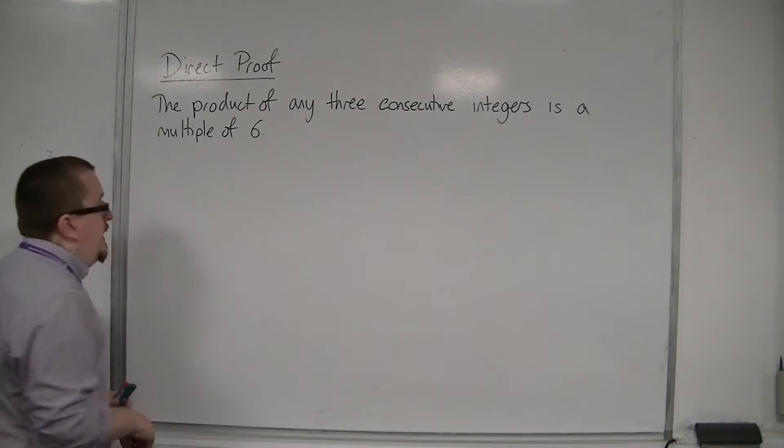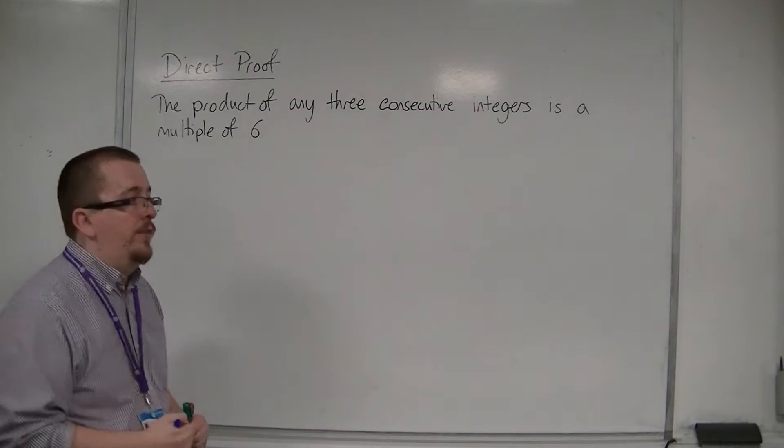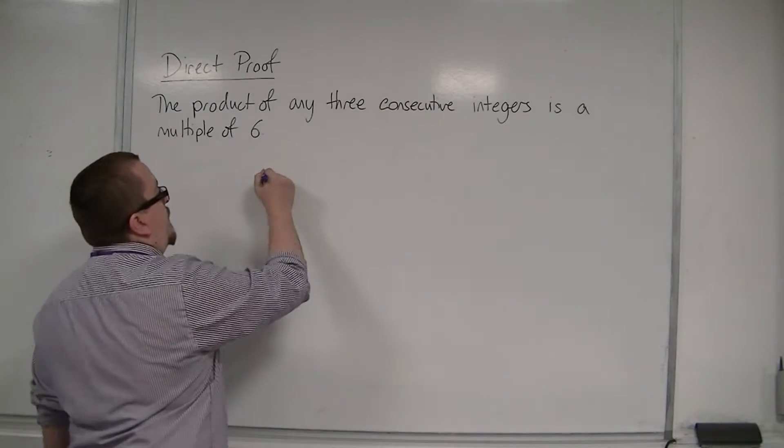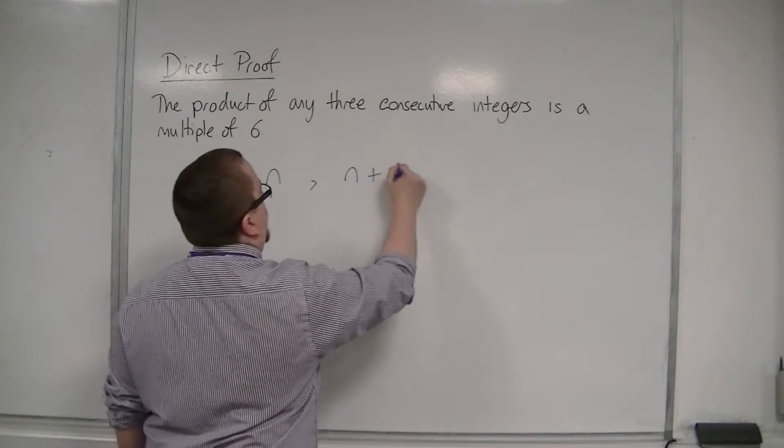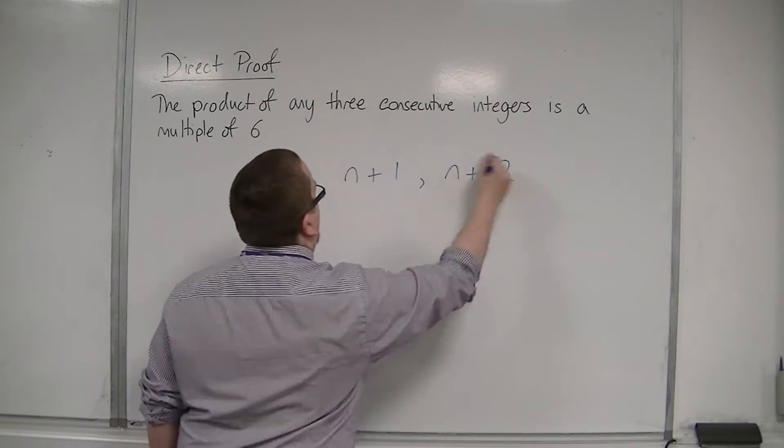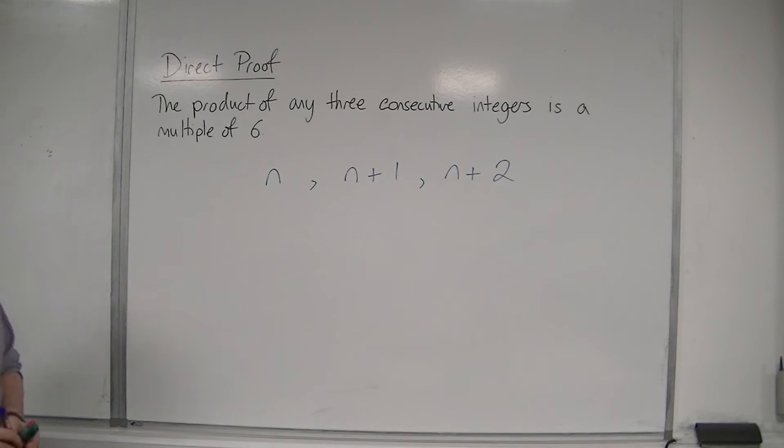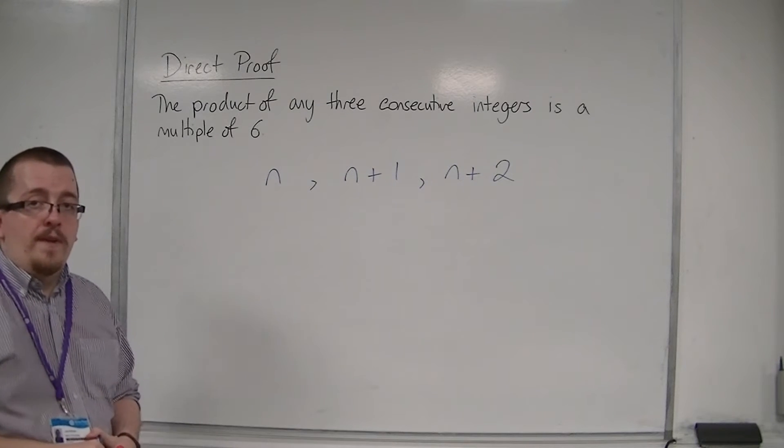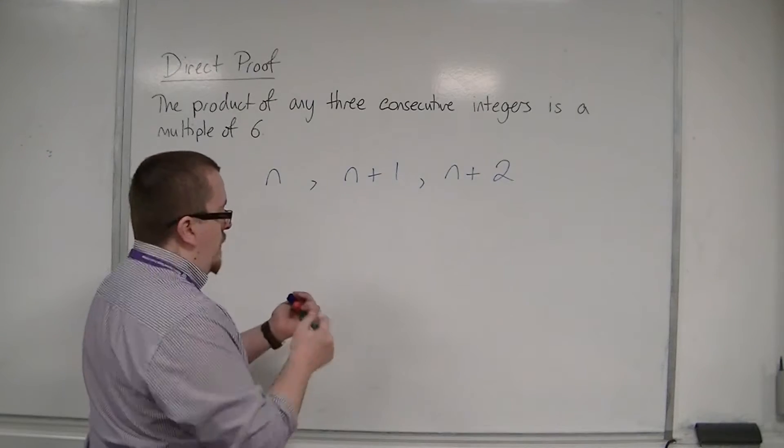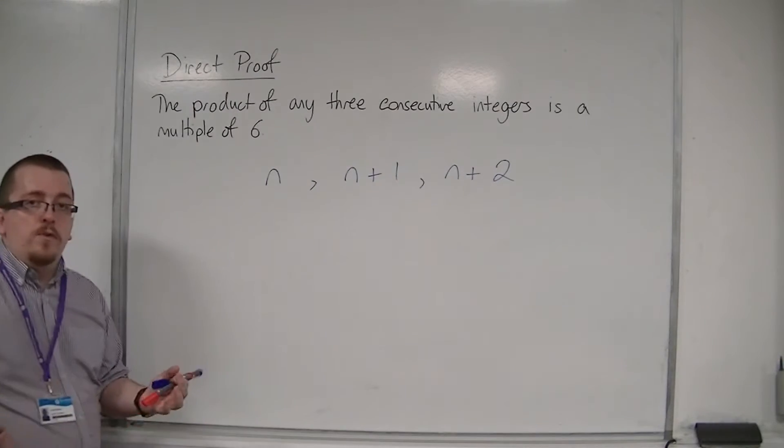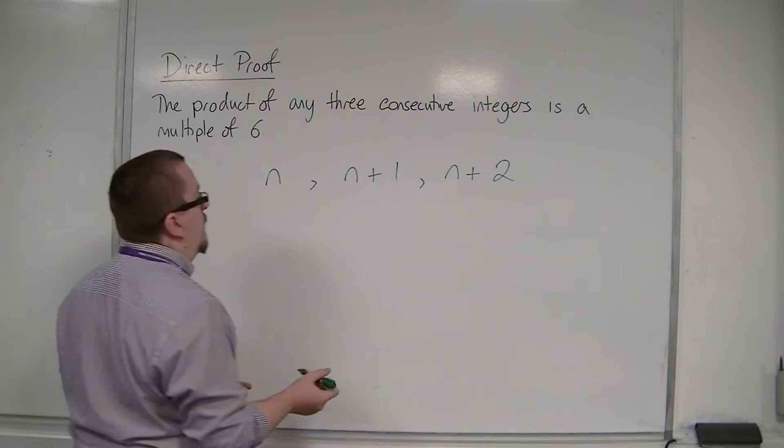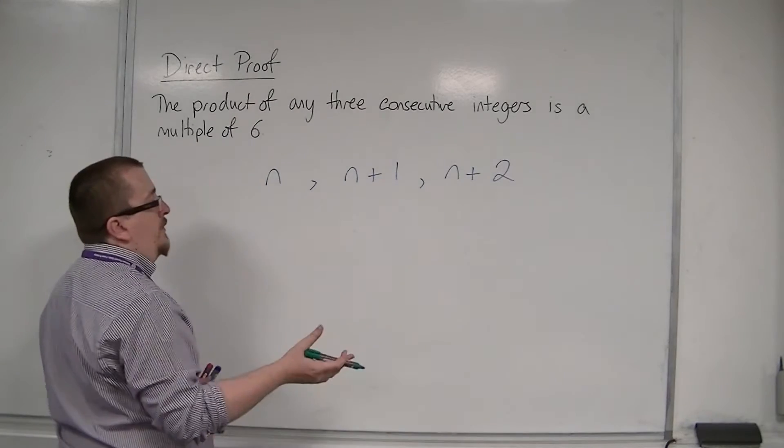So, if you have three consecutive integers, we could write those integers down. We could write n, n plus 1, and n plus 2. Now, regardless of the value of n, if we just picked any three consecutive integers, they're the general consecutive integers.